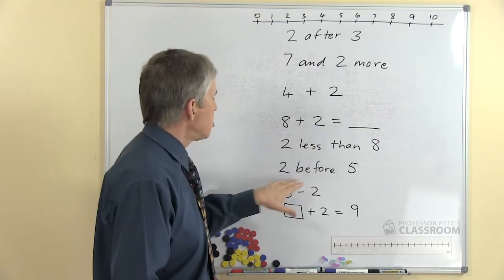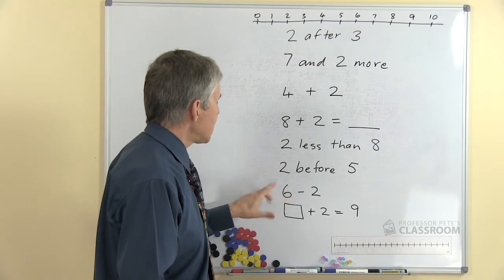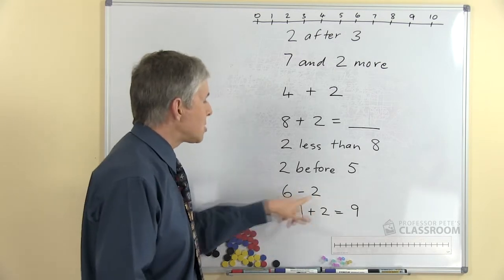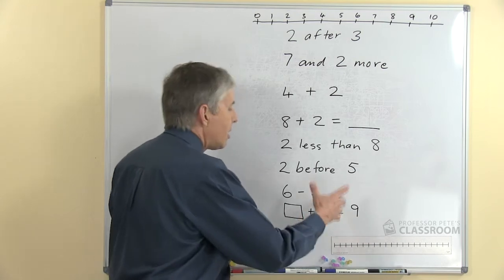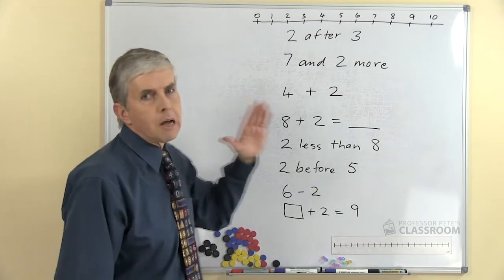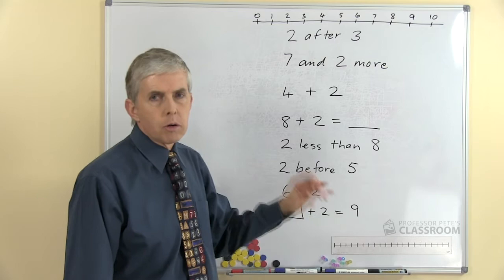Two less than, two before, six take away two, and then this one where we have what's called a missing addend - something plus two equals nine. So we can use a number line for all of those questions.